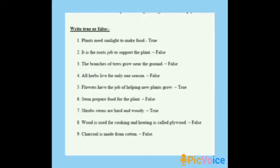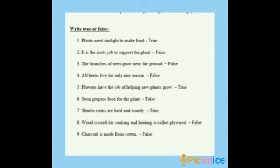Sixth: stem prepares food for the plant — false. Leaves prepare food for the plant. Seventh: shrub's stems are hard and woody — true. Eighth: wood used for cooking and heating is called plywood — false. Wood used for cooking and heating is called firewood. Ninth: charcoal is made from cotton — false. Charcoal is made from wood.